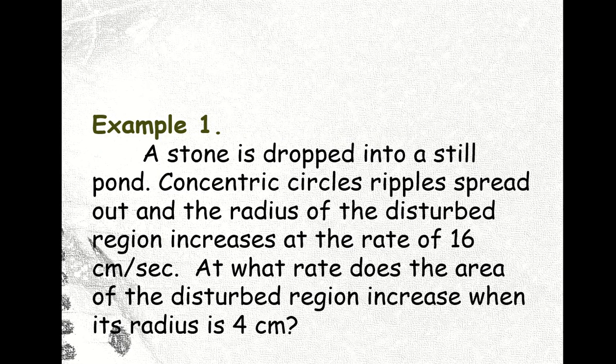Okay, for example, a stone is dropped into a still pond. Concentric circles ripples spread out and the radius of the disturbed region increases at the rate of 16 cm per second. At what rate does the area of the disturbed region increase when its radius is 4 cm? Still remember? Familiar? Familiar with this problem?